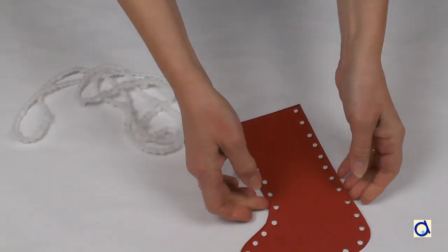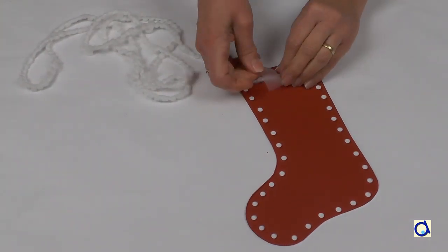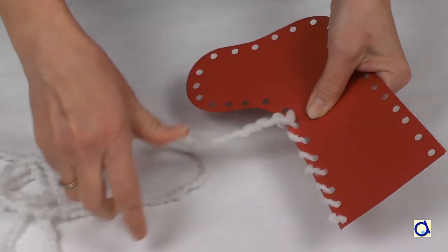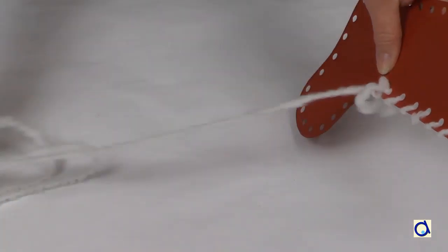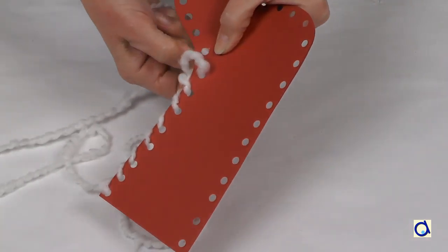A second possibility is to always pass the yarn upwards in a spiral movement. In this case, you will need a longer piece of yarn. As in the first case, start by passing the yarn through the first hole and paste the end on the back of the stocking.